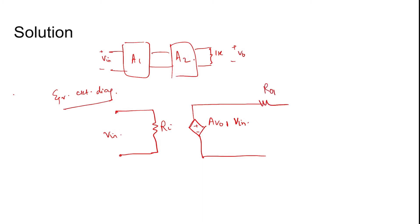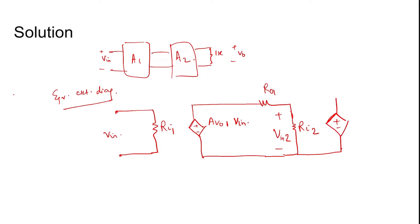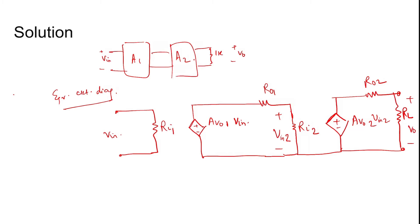The output impedance of the first amplifier is Ro1. The voltage at the junction is named Vin2, since it feeds into the next amplifier. The input impedance of the second amplifier is Ri2. The gain of the second amplifier is Av02 times Vin2, with output impedance Ro2. The load RL is connected at the output, giving Vout. The problem asks for Vout/Vin.